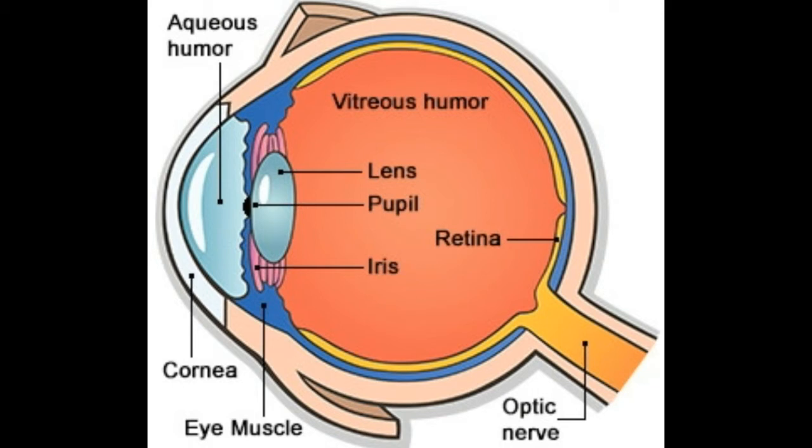Iris — the iris is a ring of muscles in the central part of the eye that is helpful in regulating the amount of light entering the eye by controlling the size of the pupil. Pupil — this is an opening in the center of the iris through which light passes and falls on the lens. Its size is controlled by the iris.